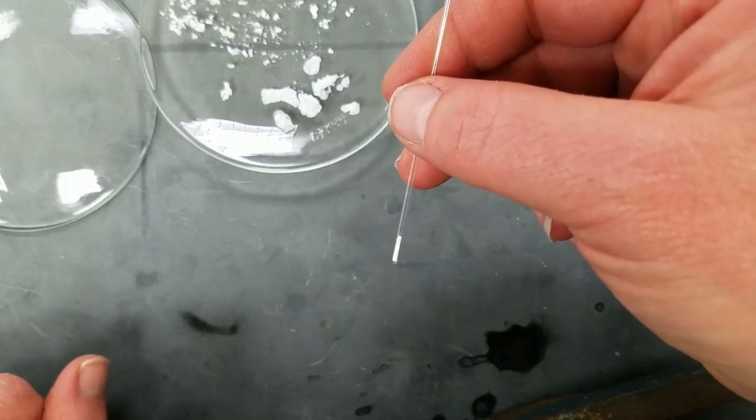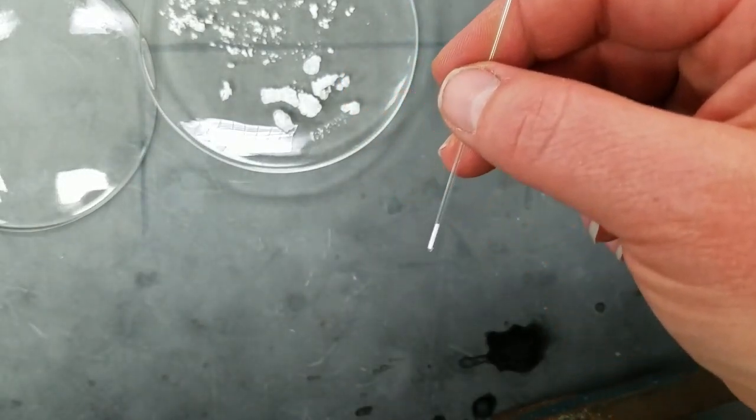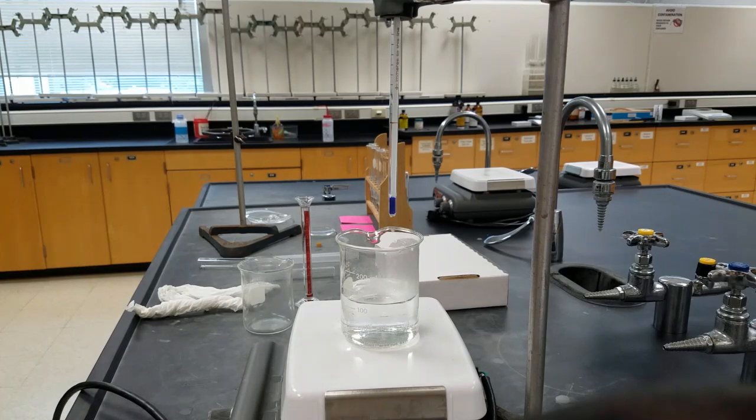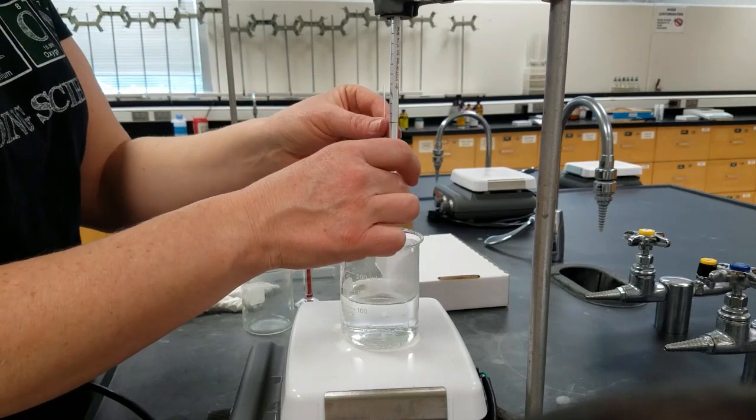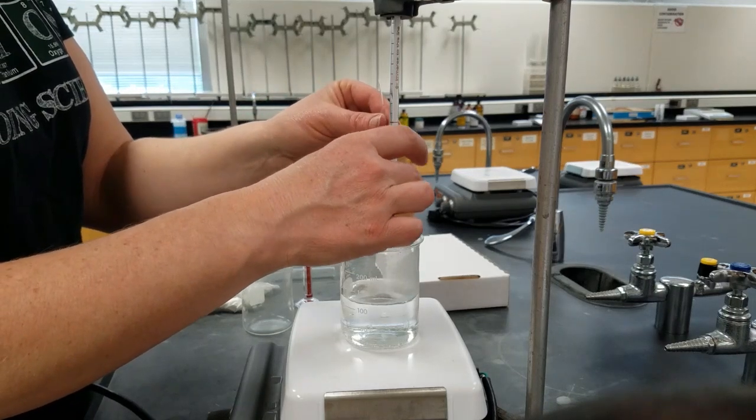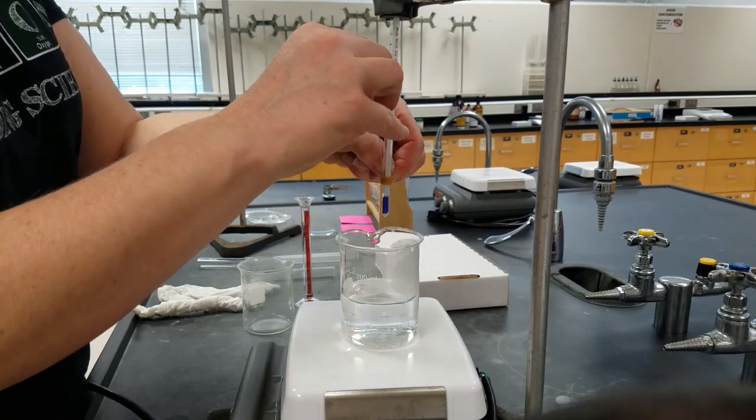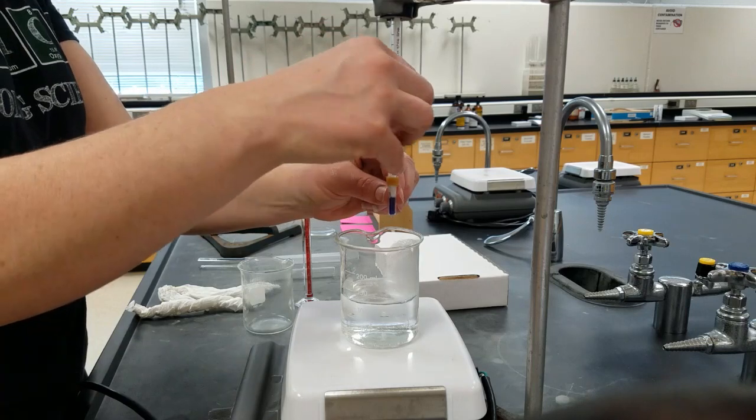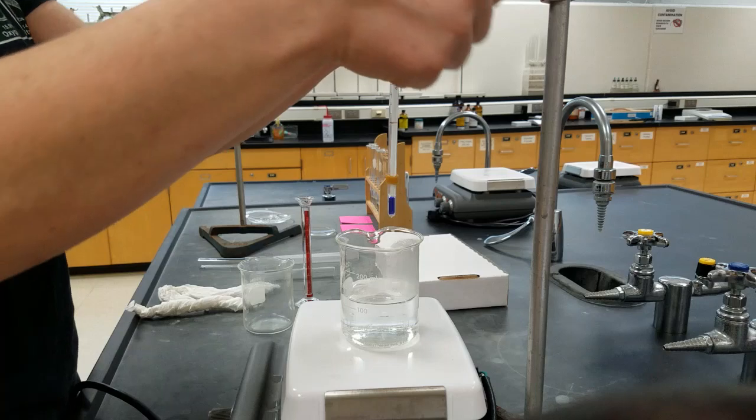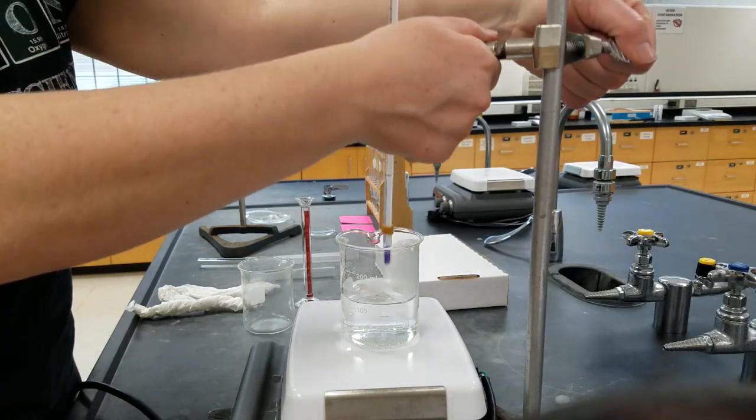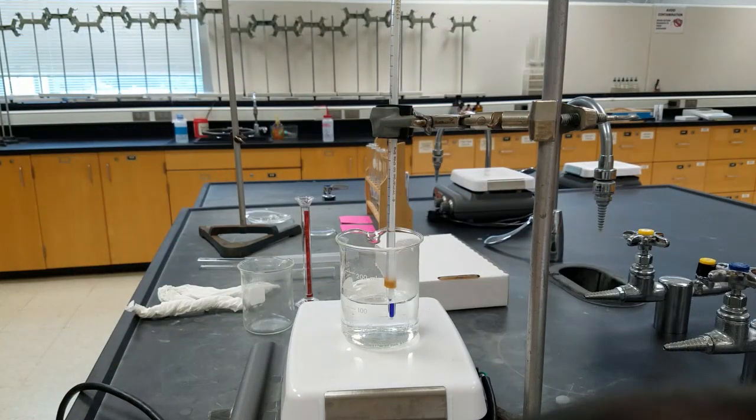We're going to use the melting point to determine the identity of our unknown solid. We take that tube that we've put our unknown solid in, use a small rubber band to attach that little capillary tube right next to our thermometer, and then we can lower our thermometer down into the water and wait for our unknown to melt.